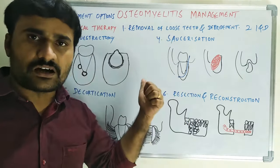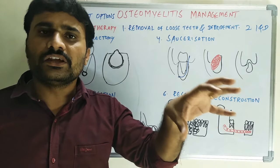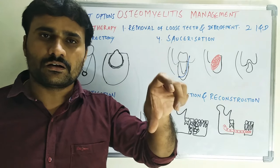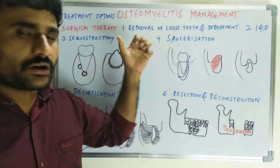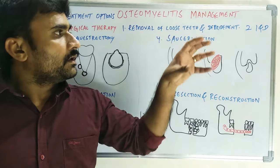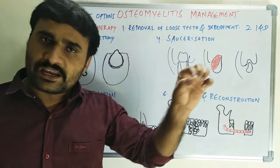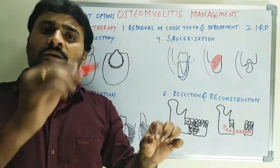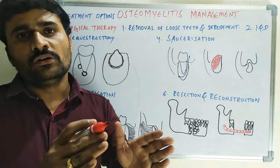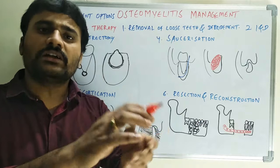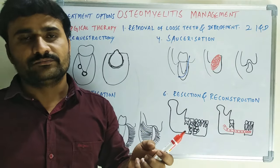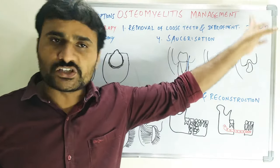Trephination is especially useful when there is osteomyelitis of the ramus and intraoral abscess drainage is not possible. In those cases, an extraoral incision is made and a window is prepared in the lateral surface of the mandible in the ramus region so that the abscess from the medullary space can be drained.